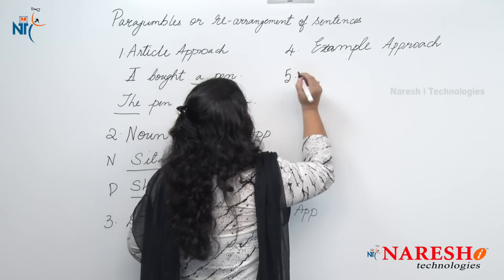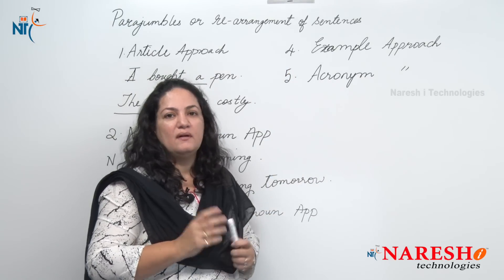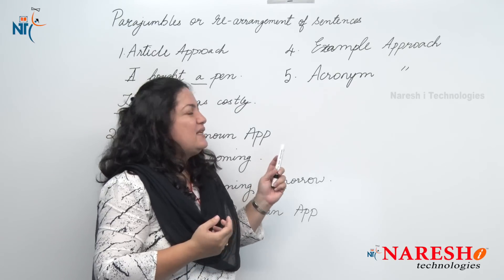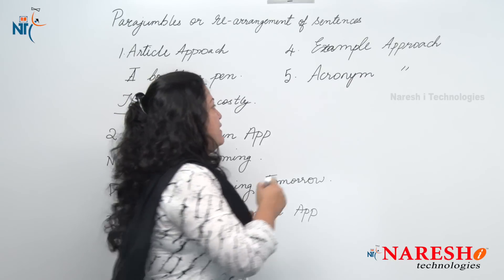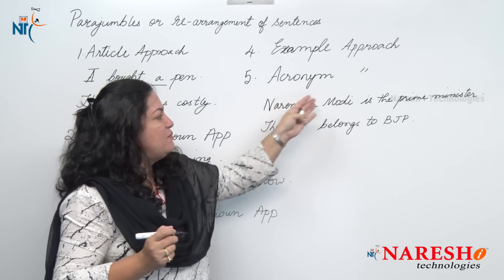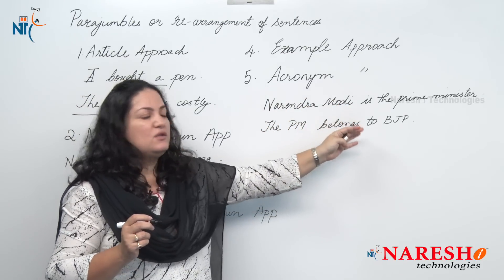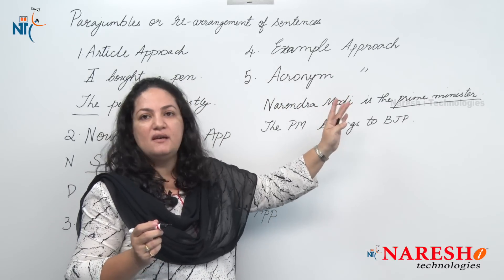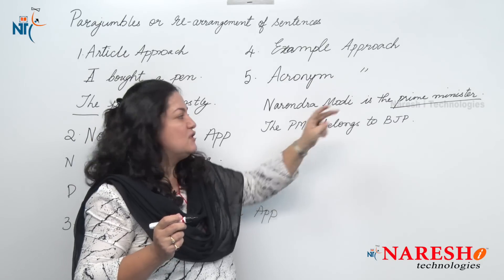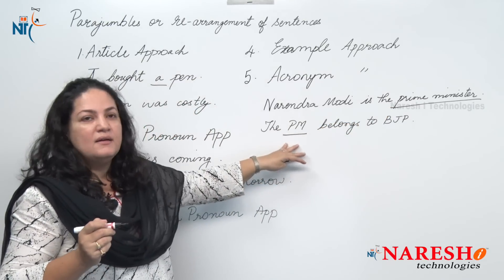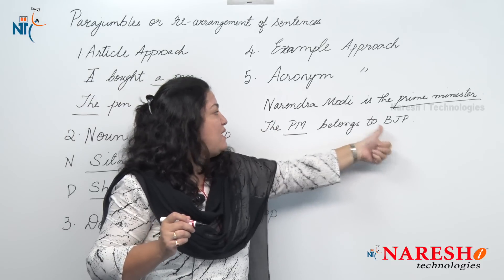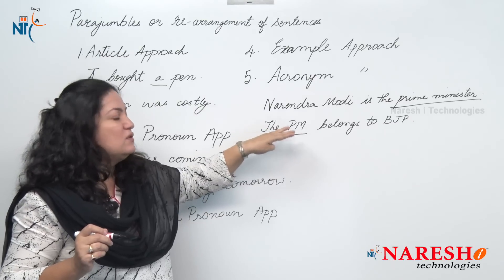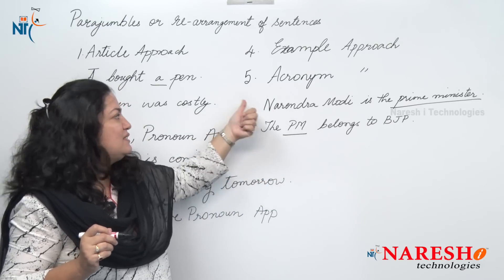The next approach is the acronym approach. An acronym means a short form or abbreviation. For example, 'Narendra Modi is the prime minister' uses the full form, while 'the prime minister belongs to BJP' uses an abbreviation. The sentence using the full form comes first in order, and the sentence using the acronym or abbreviated form comes lower in the order. So the full form appears before the abbreviated form.